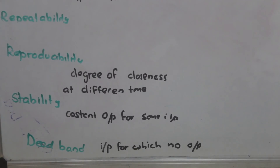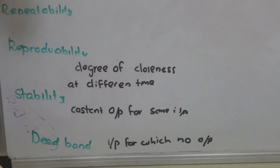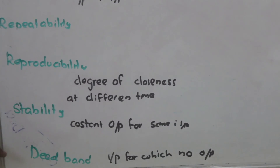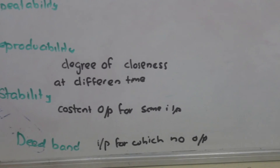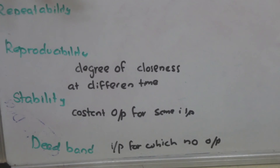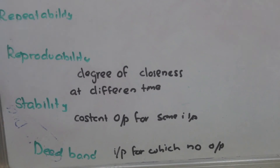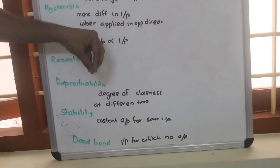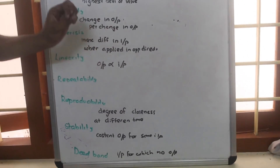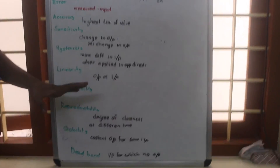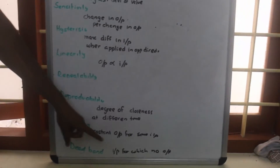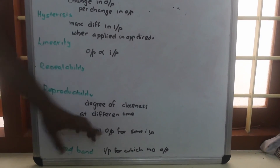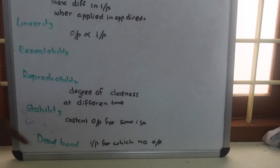Now stability. Stability means at the same input the output should be the same — that device can be called as stable. Dead band. Dead band means suppose while we are using weight measuring devices, at low quantities of mass the measuring devices do not show any output. Those low quantities can be called as the dead band — the input for which there is no output. That is what we call as dead band.